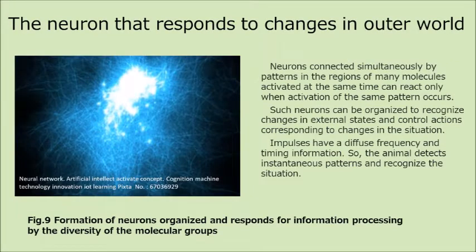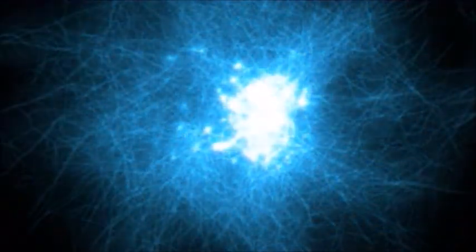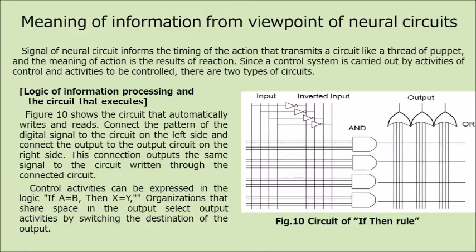Neurons connected simultaneously by patterns in the regions of many molecules activated at the same time can react only when activation of the same pattern occurs. Such neurons can be organized to recognize changes in external states and control actions corresponding to changes in the situation. Impulses have a diffuse frequency and timing information, so the animal detects instantaneous patterns and recognizes the situation. The signal of a neural circuit informs the timing of the action that transmits through a circuit like a thread of a puppet, and the meaning of action is the result of reaction.